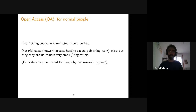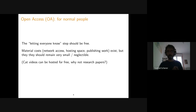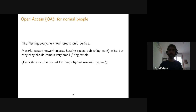What normal people mean by open access is that the step where you let everyone know should be free — people should be able to access your work without paying anything, and you should be able to publish without paying anything. Of course there are some material costs: network access, hosting, and some work during publishing like assigning a DOI. So someone has to pay for this, but the cost involved should remain very small. If we can host videos for free and have them reach a large audience, why could we not have free research papers?